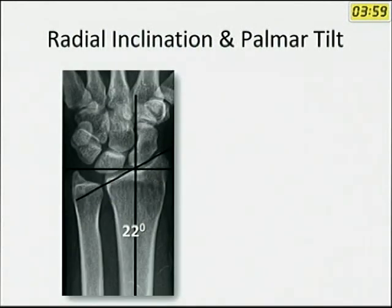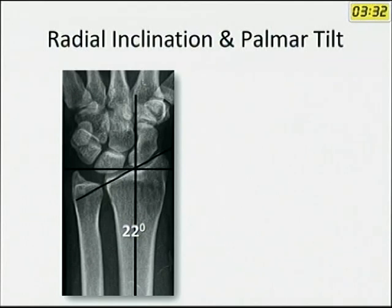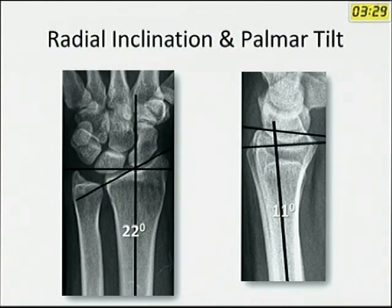Reduction is assessed by measuring radial inclination — drawn by the longitudinal axis of the radius, a perpendicular to that line, and a line along the articular surface; normal is about 22 degrees. On the lateral view, a perpendicular and a line parallel to the articular surface gives the palmar tilt, which should ideally be 11 degrees. There are two length measurements: radial length and ulnar variance. Radial length is measured from the ulnar corner to the tip of the radial styloid and should ideally be 11 mm.